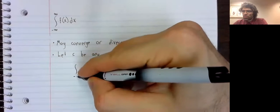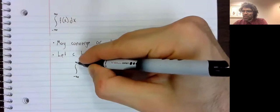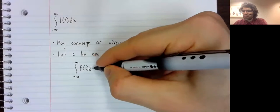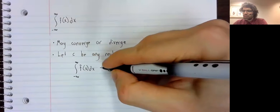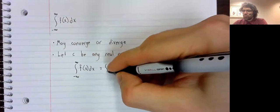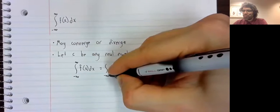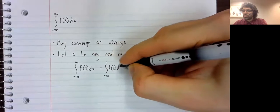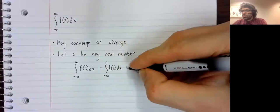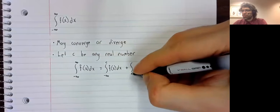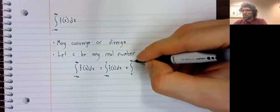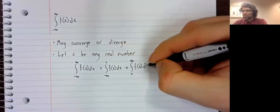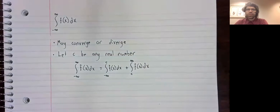The integral from negative infinity to positive infinity is the integral from negative infinity to c, plus the integral from c to positive infinity.